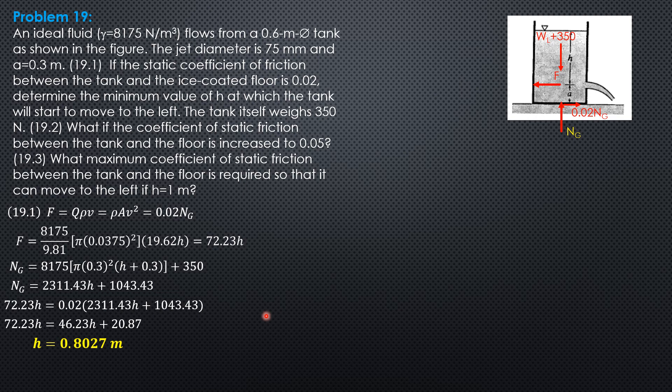Then for the second part, 72.23H equals 0.05 times 2311.43H plus 1043.43. The coefficient of static friction is increased to 0.05. So 72.23H is 115.57H plus 52.17.